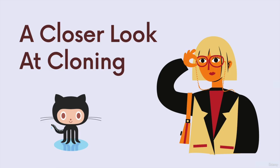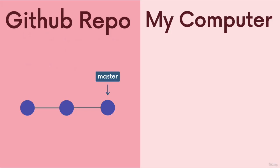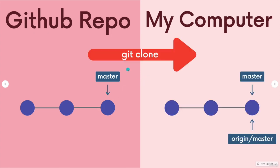When we clone a repository — whatever the repository is, whether it's one I made, or I'm cloning React or some really popular open source repository — at the very beginning we have nothing on our machine and we have the GitHub repository. Let's say it's three commits, one branch, the master branch. When I clone that with git clone and the URL, I end up with the three commits, all files from the repository, we have a git repo now, and I have the master branch.